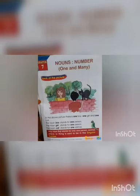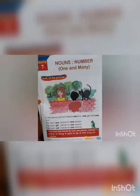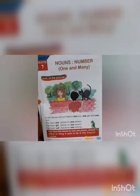Look at the picture. In the picture, there is one boy, one girl, and one cat. The boy stands for one person. The girl also stands for one person. The noun 'cat' stands for one animal. Any noun that stands for only one person, animal, place or thing is said to be in the singular number — that is, one person, one animal, place or thing.